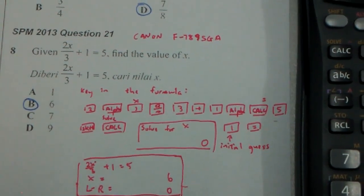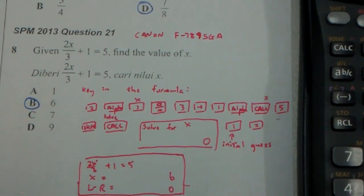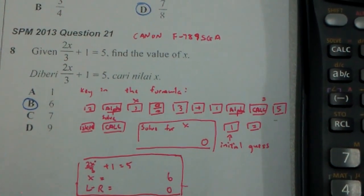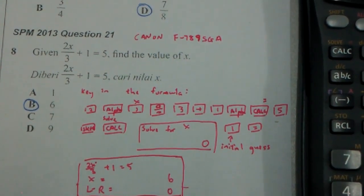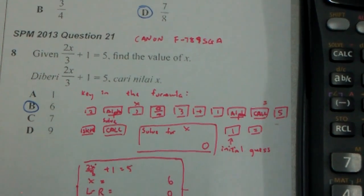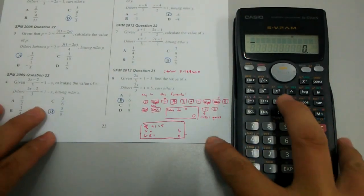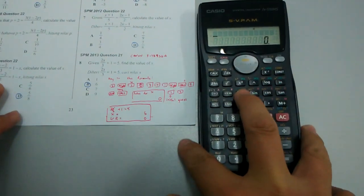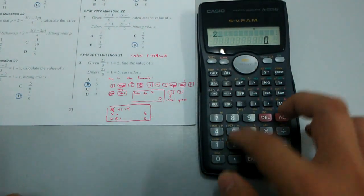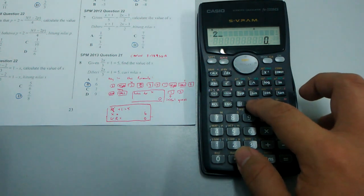In this video I will show you how to use the Casio 570MS to solve linear equations. First we need to key in this formula into the calculator: 2x/3 + 1 = 5. I enter 2, alpha X, over 3, plus 1, alpha equals 5, then shift solve. I put in the initial guess of 1.